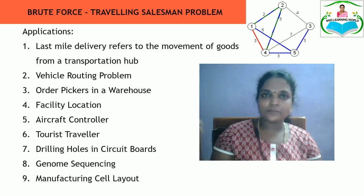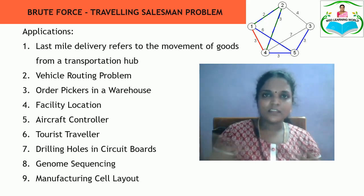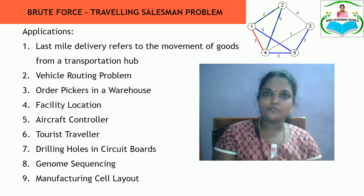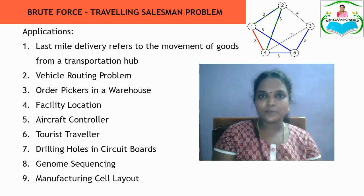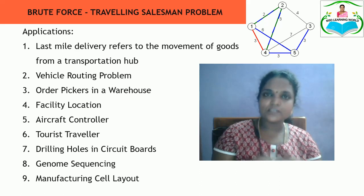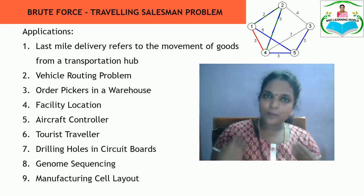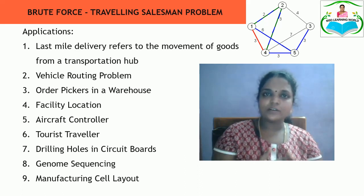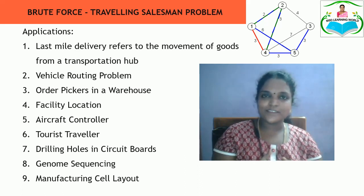For finding the shortest path from one point to any other, we can use the Travelling Salesman Problem. It is a very challenging solution and is commonly used in most real-time applications.